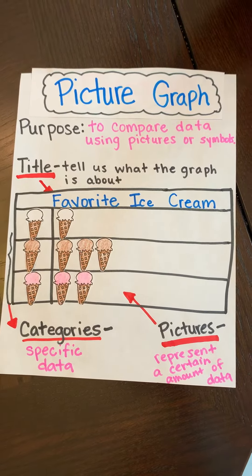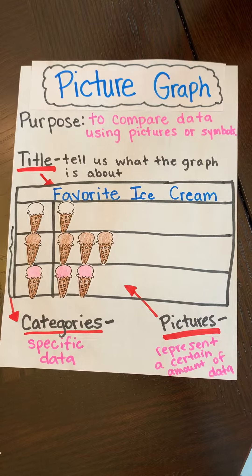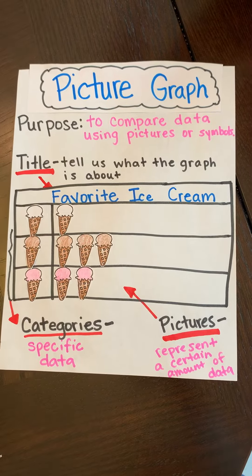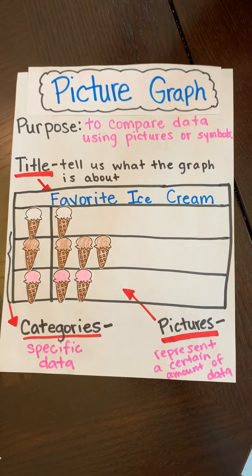The next vocabulary word is real object graph — a graph that uses real objects to represent each piece of data. The next vocabulary word is picture graph — a graph that uses a different picture to represent each piece of data.